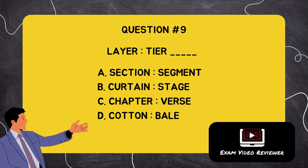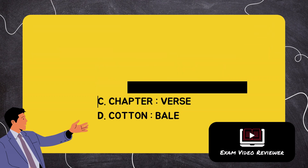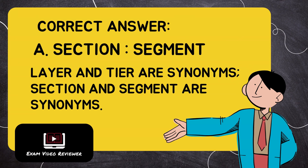Question number nine: layer is to tier as blank. Letter A: section is to segment, Letter B: curtain is to stage, Letter C: chapter is to verse, Letter D: cotton is to bed. The correct answer is Letter A, section is to segment. Layer and tier are synonyms; section and segment are synonyms.